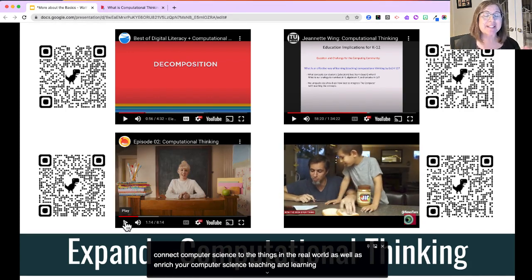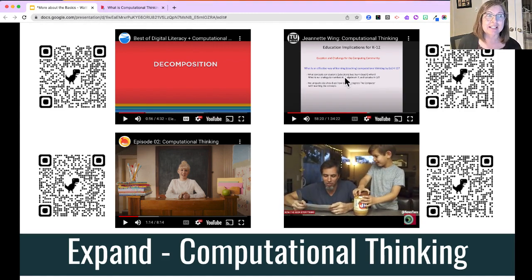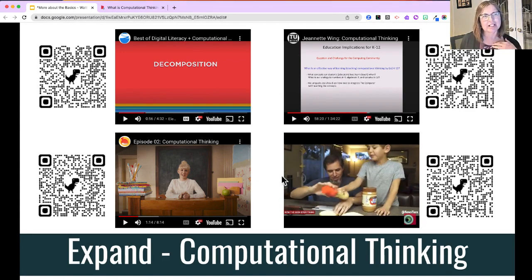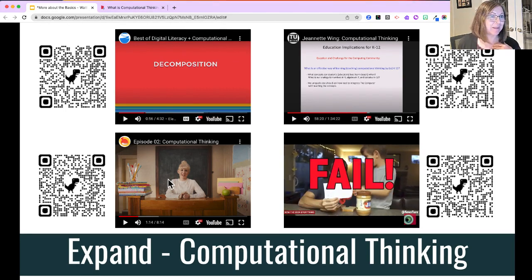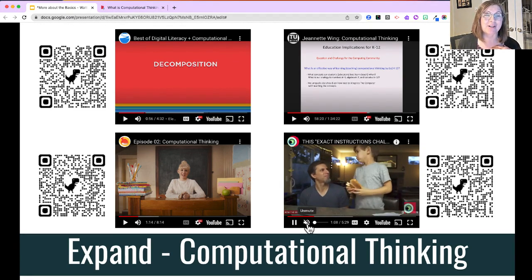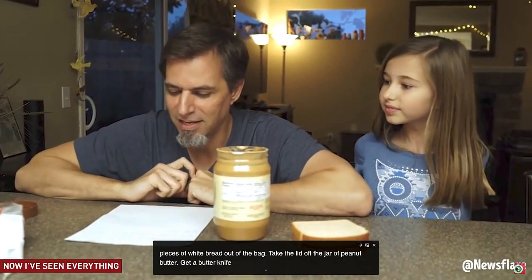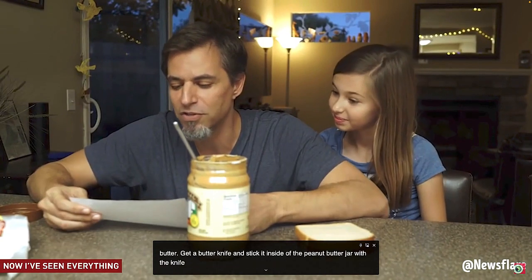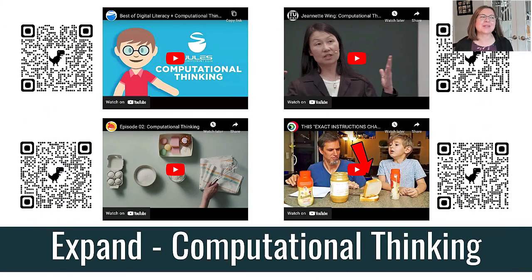You might have noticed that the third video had a quote defining computational thinking from Jeanette Wing, who of course gave the lecture in the second video. So we have lots of overlap and similarity across these. You might also have noticed she refers to making a peanut butter sandwich, which is exactly about writing instructions that need to be extremely specific — get a butter knife and stick it inside the peanut butter jar, scoop a bit of peanut butter out. 'A bit? That means like a lot.' I hope you found these videos as interesting as I did in terms of wrapping your head around the notion of computational thinking.